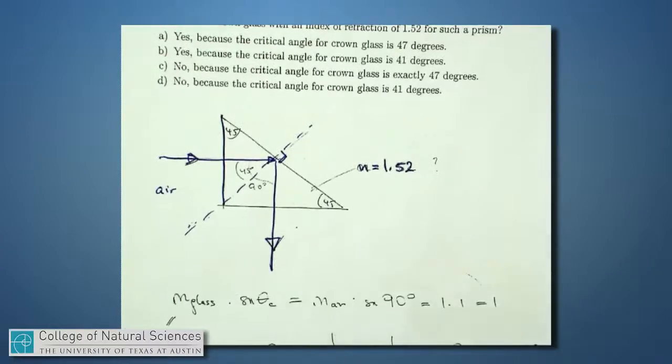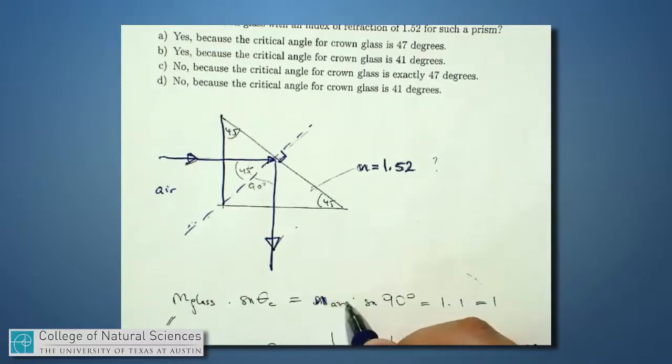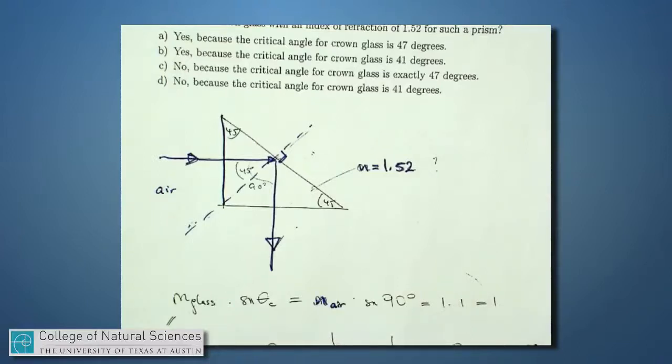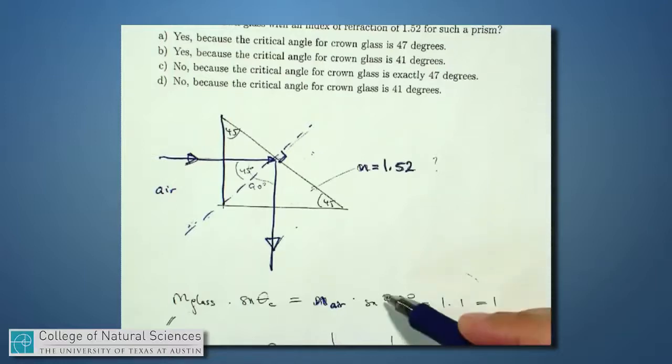Well we're going to set up Snell's law again. We're going to say N of the glass times the sine of this critical angle equals N of the air, because that's what's out of air, times the sine of 90 degrees, because that's the largest angle I can have away from the perpendicular. I already know what this N is. It's 1.52 when I'm in the glass. And if I multiply by, on this right-hand side, I have N of air times the sine of 90 degrees. This is 1, and this is 1. So I just have 1 times 1 equals 1 on the right-hand side.